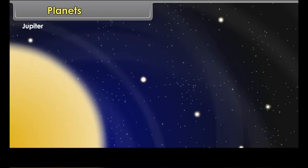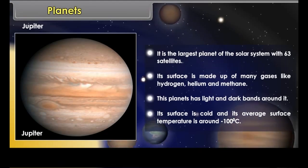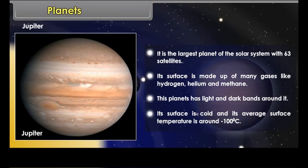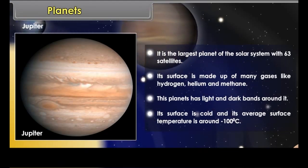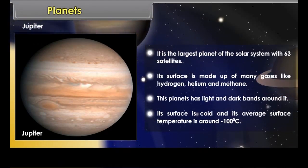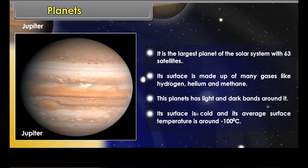Jupiter is the largest planet of the solar system, with 39 satellites. Its surface is made up of many gases.